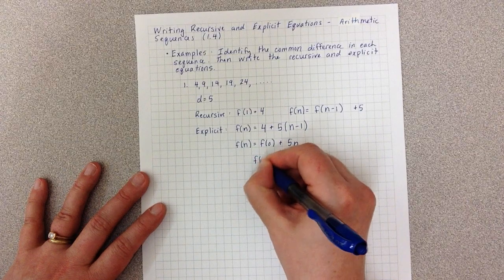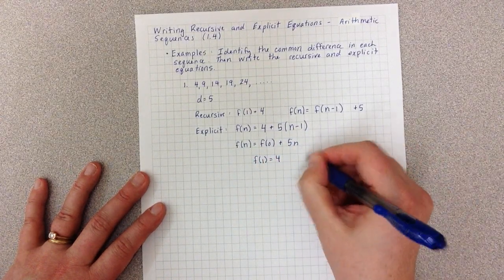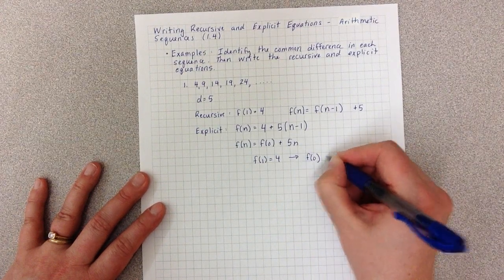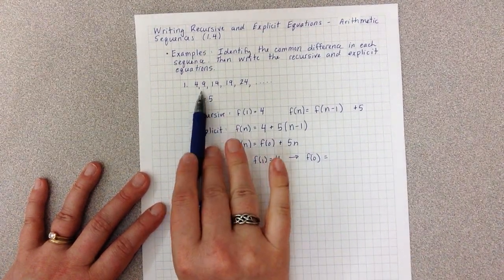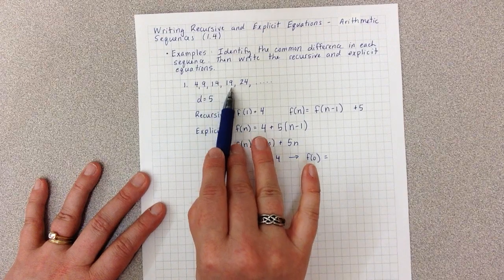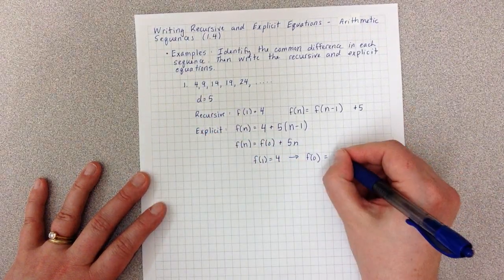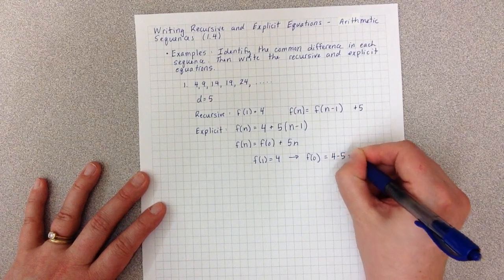I know F(1) = 4, and I want to go backwards one time to get F(0). Well, forwards I'm adding five, so backwards I would be subtracting five.